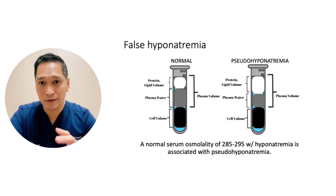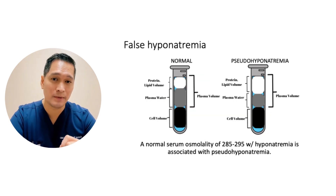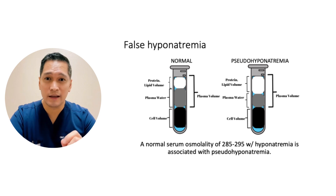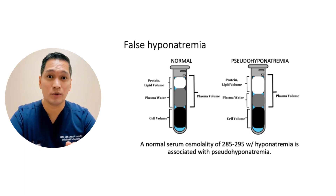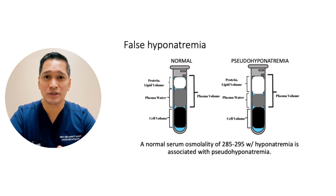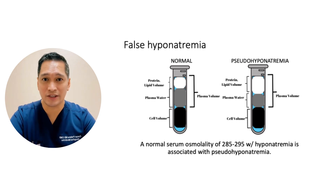There are two different types of false hypernatremia. A normal serum osmolality of 285 to 295 with hypernatremia is associated with pseudo-hypernatremia. In pseudo-hypernatremia, both the serum osmolality and tonicity are normal. The low sodium is due to increased lipid such as triglycerides, or high protein such as multiple myeloma and those receiving IVIG treatment.